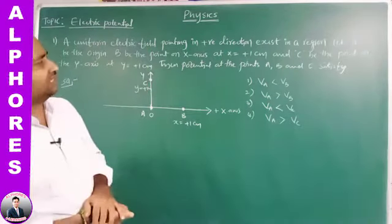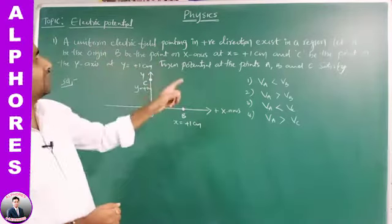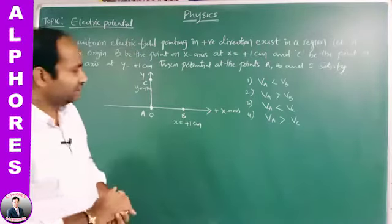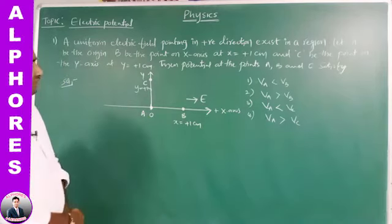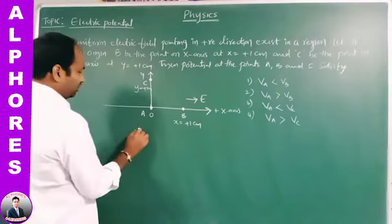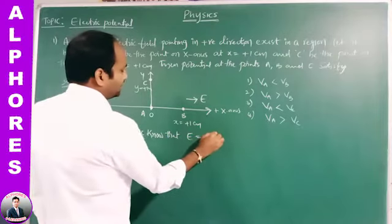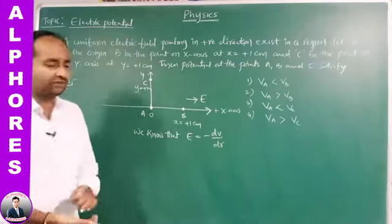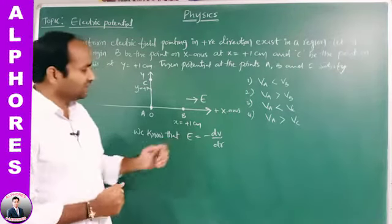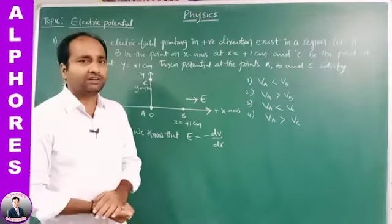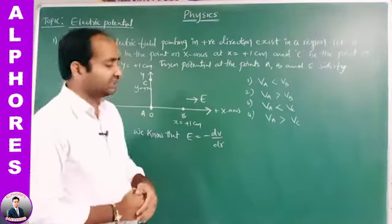Observing these four relations, we use the key relation E = −dV/dr. The direction of the electric field is along the direction of decreasing value of potential.